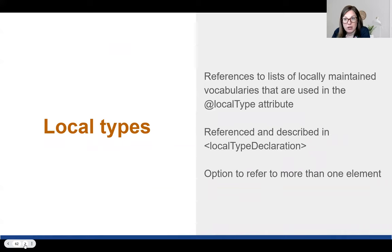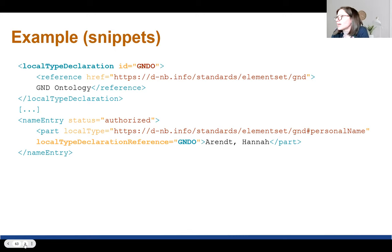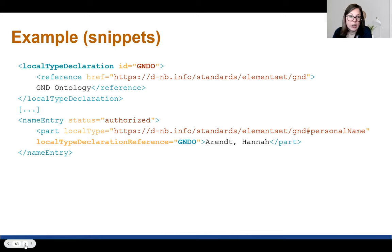Local types continue to be used in this version of EAC CPF as an attribute on elements. You can have references in control for the local type declaration where you declare what these local types are, and there is now a local type declaration reference attribute that can connect the two. For example, a name entry for Hannah Arendt has a local type saying it's a personal name, and the local type declaration reference points to GNDO — meaning this local type is drawn from the GND ontology, as declared in the control section.